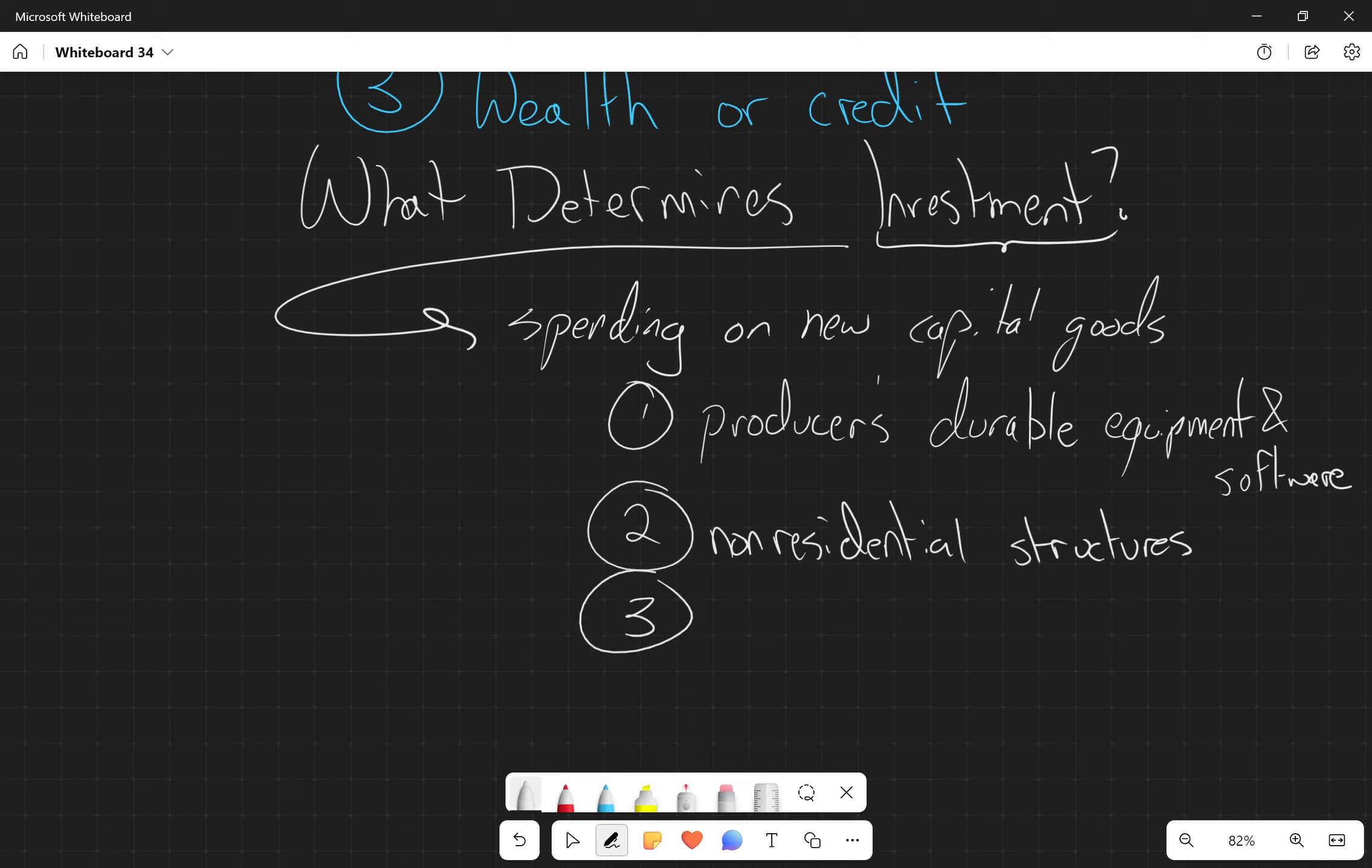The weird one in here is our changes in inventory. So essentially, if you build up a bunch of inventory this year and you don't sell it, that is considered an investment because you have extra inventory next year. That's extra inventory that you don't have to produce next year. So inventory unsold is going to be an investment.